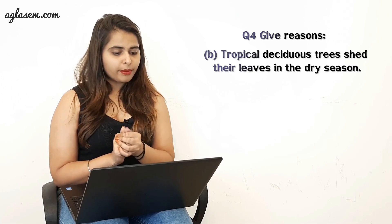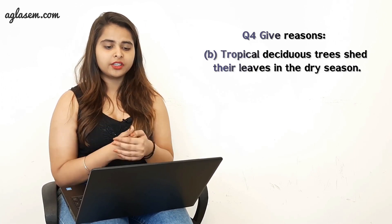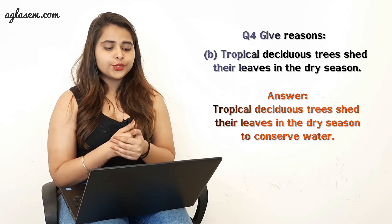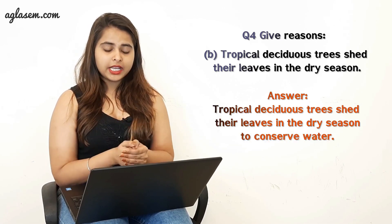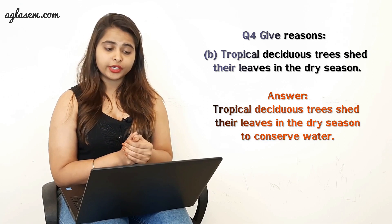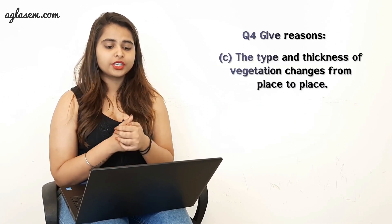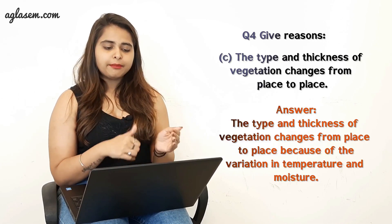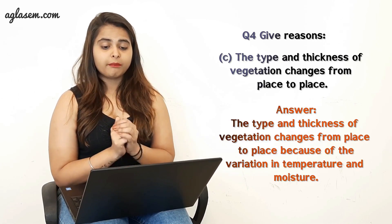The second part: why do tropical deciduous trees shed their leaves in the dry season? The answer is that tropical deciduous trees shed their leaves in the dry season to conserve water. The third part: why does the type and thickness of vegetation change from place to place? The answer is because of the variety of temperature and moisture.